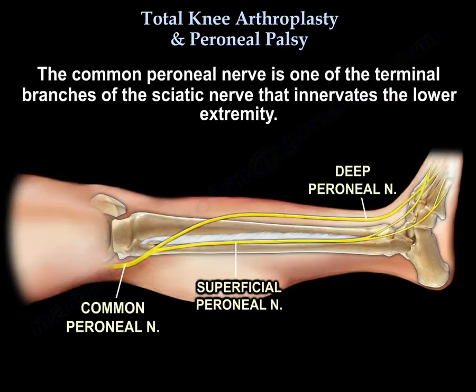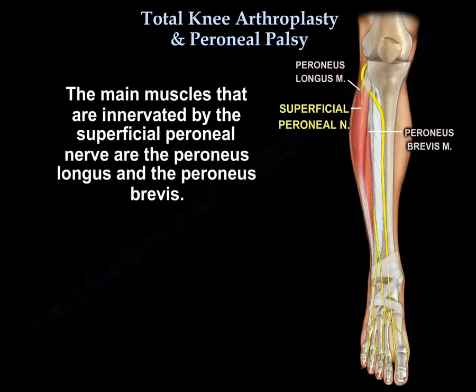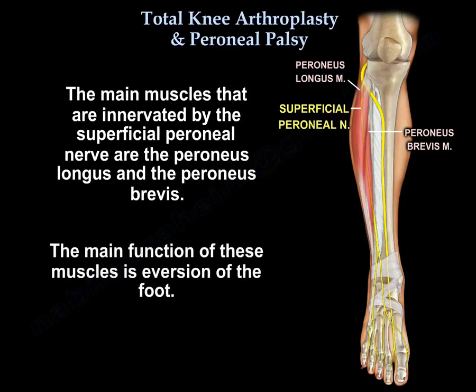The common peroneal nerve is one of the terminal branches of the sciatic nerve that innervates the lower extremity. The common peroneal nerve has two parts: the deep peroneal nerve and the superficial peroneal nerve, as you can see here in this diagram. The main muscles innervated by the superficial peroneal nerve are the peroneus longus and peroneus brevis, and the main function of these muscles is eversion of the foot.